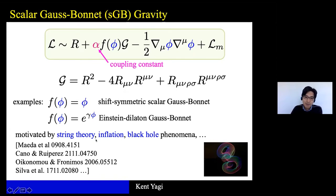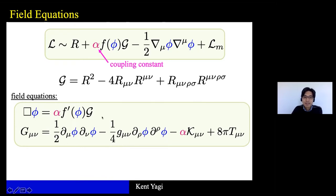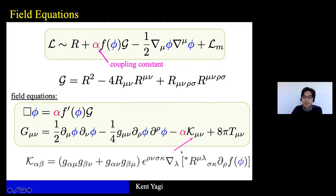The field equations consist of one for the scalar field and one for the metric. The scalar field equation follows a wave equation where the scalar field is sourced by the Gauss-Bonnet invariant coupled to the scalar field. The Einstein equation is modified due to additional terms: the first two correspond to the stress-energy tensor for the scalar field, and an additional term with a complicated expression comes from the extra term in the action. So we have a wave equation for the scalar field and also a modified Einstein equation.